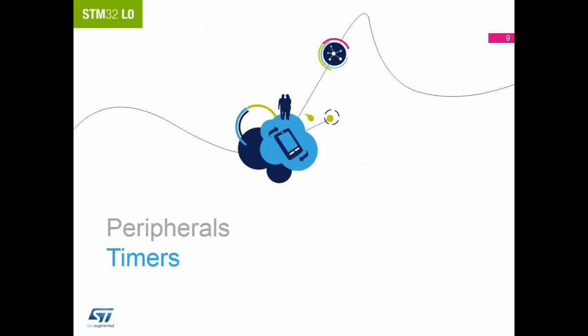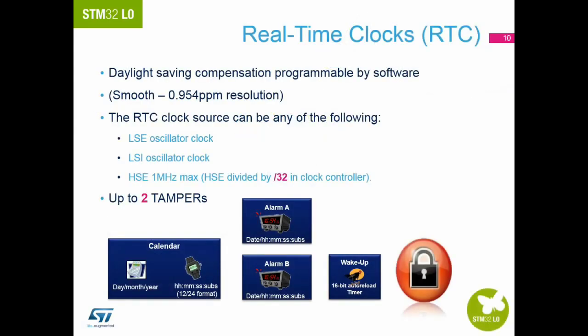Now we will look at the various timers on board the STM32 L0. As this is a low power device, the RTC is a very important timer. The RTC can be clocked from various sources, with the LSE at 32.768 kHz being the most common. The time and date is all done in hardware, with only daylight saving being done in software. The RTC peripheral also has two tampers, two alarms, and periodic programmable wake-up.